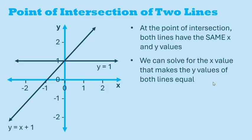If we want to find the point of intersection algebraically, we can solve for the x value that makes the y values of both lines equal. This line is y equals x plus 1, and this line is y equals 1. So we can set them equal to get x plus 1 equals 1. Let's isolate x by subtracting 1 from both sides, which simplifies to x equals 0. This answer means the point of intersection occurs where x equals 0.